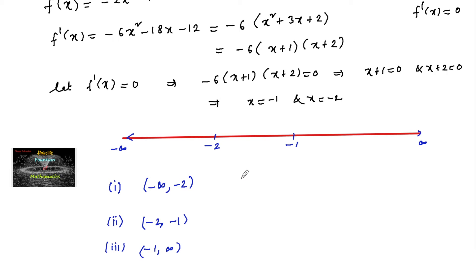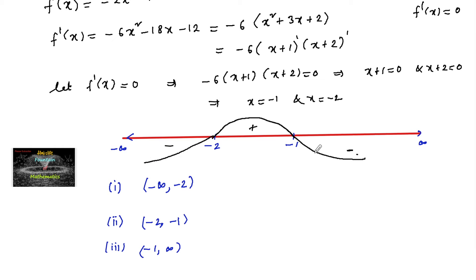Using the wavy curve method, since f'(x) has a leading factor of -6, we start from the negative side above -1. Because of the negative sign it is always negative above -1. It changes sign at each root due to odd powers: positive in (-2, -1), then negative again. The wavy curve method is explained in the description box link. We can confirm that in (-2, -1) the function is increasing, and in (-∞, -2) and (-1, +∞) it is decreasing.